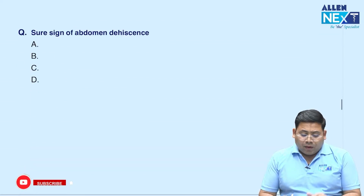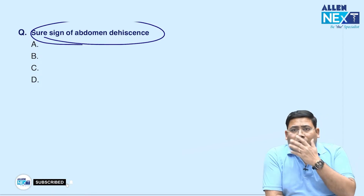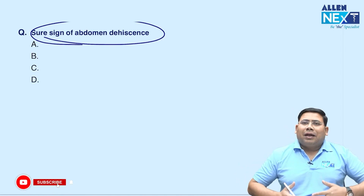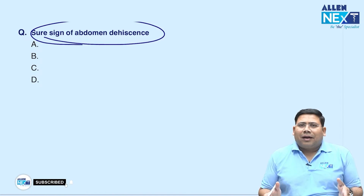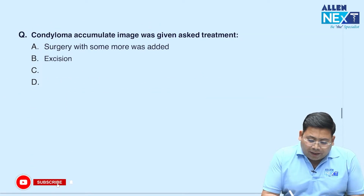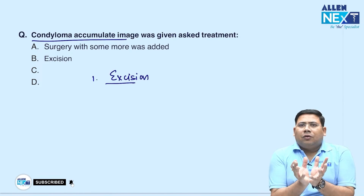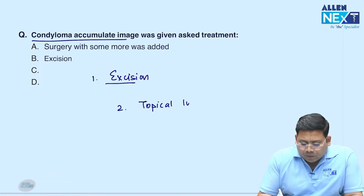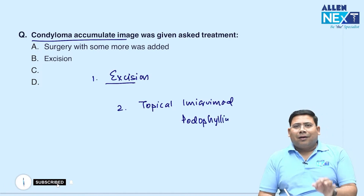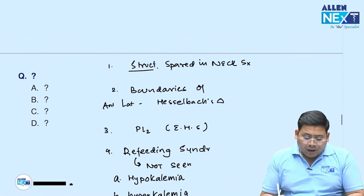A question on abdominal wall dehiscence was recalled but options were not provided. If there is abdominal wall dehiscence versus diastasis recti — diastasis or gaping of recti is very common. Next, condylomata acuminata: management options are excision, or topically podophyllin or imiquimod can also be used. I have uploaded a case of condylomata acuminata of the perineum on my YouTube channel for reference.